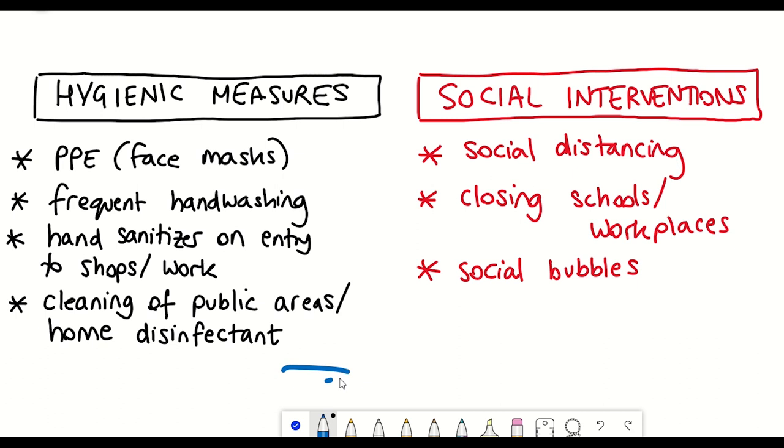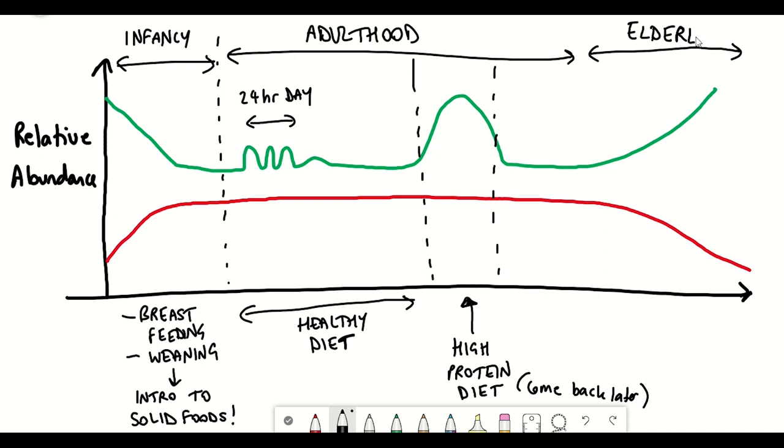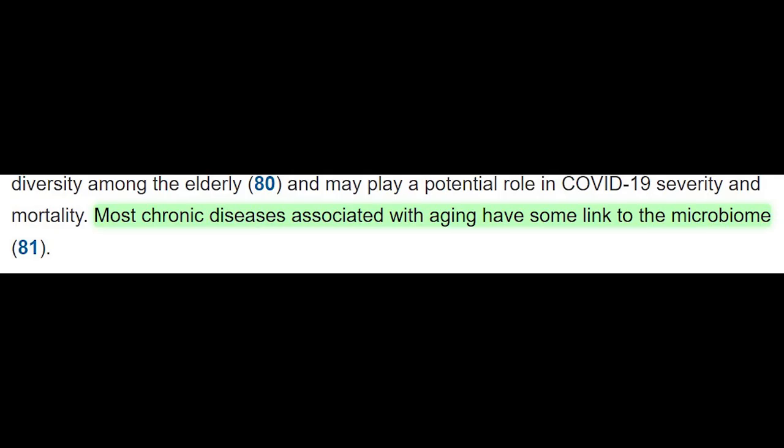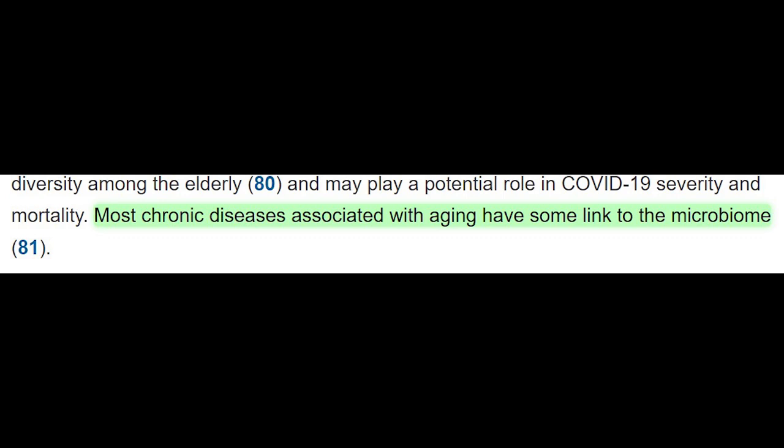And so whilst the microbiome has been shown to blossom through infancy and reach full maturity by adulthood, by later life, the microbiome diversity is known to decrease. And many chronic diseases associated with aging have some link to the microbiome.